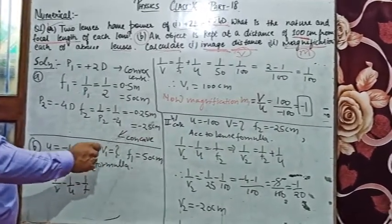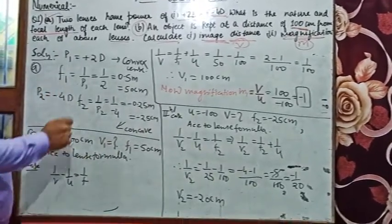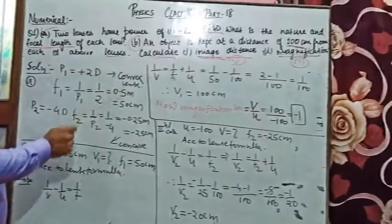Minus is our focal length, so this will be a concave lens. So we have two lenses of different nature.